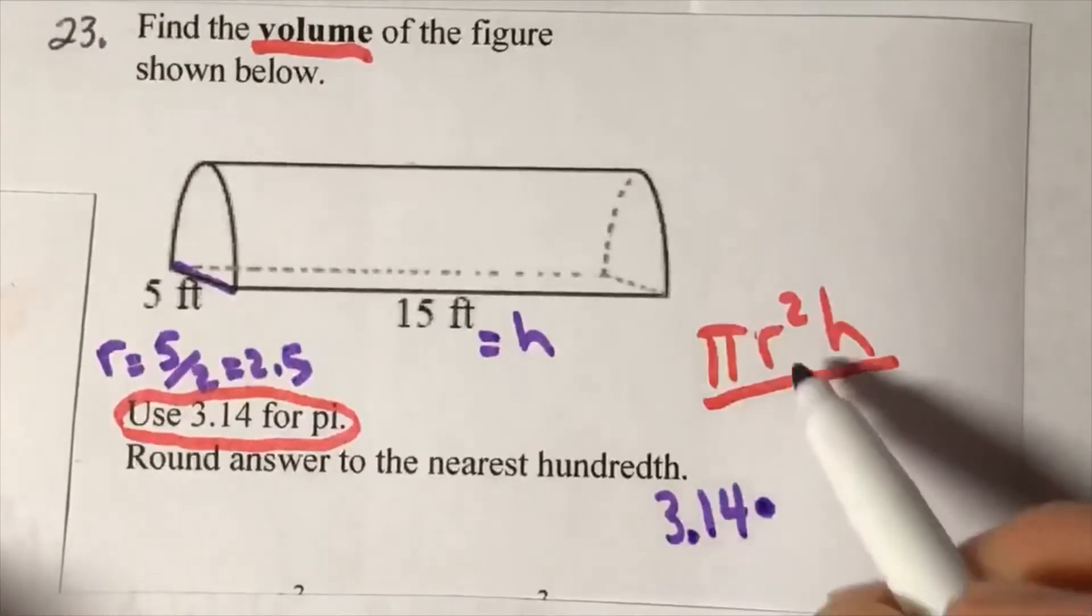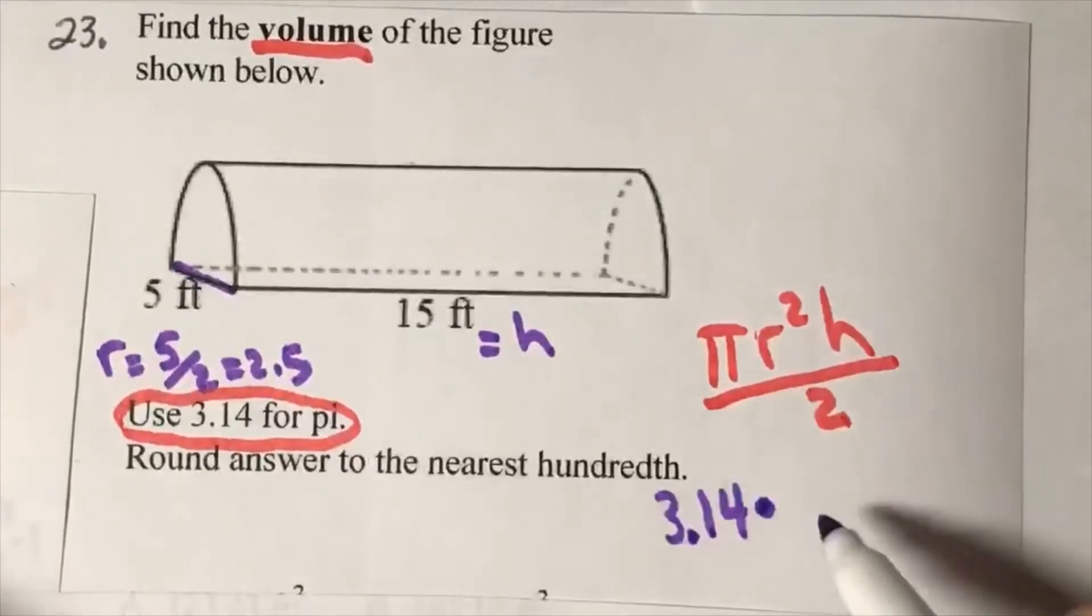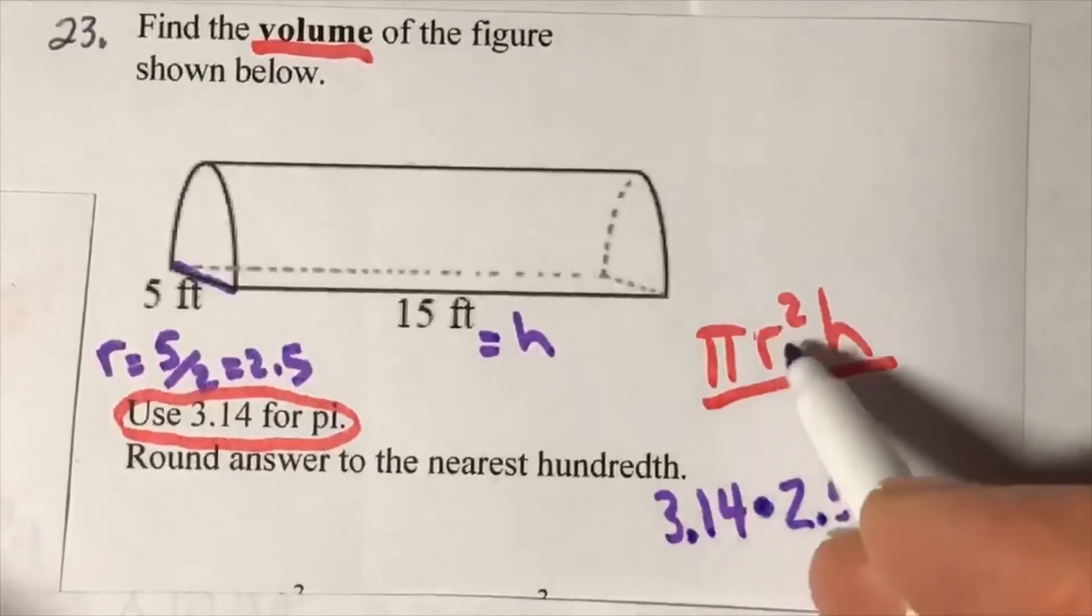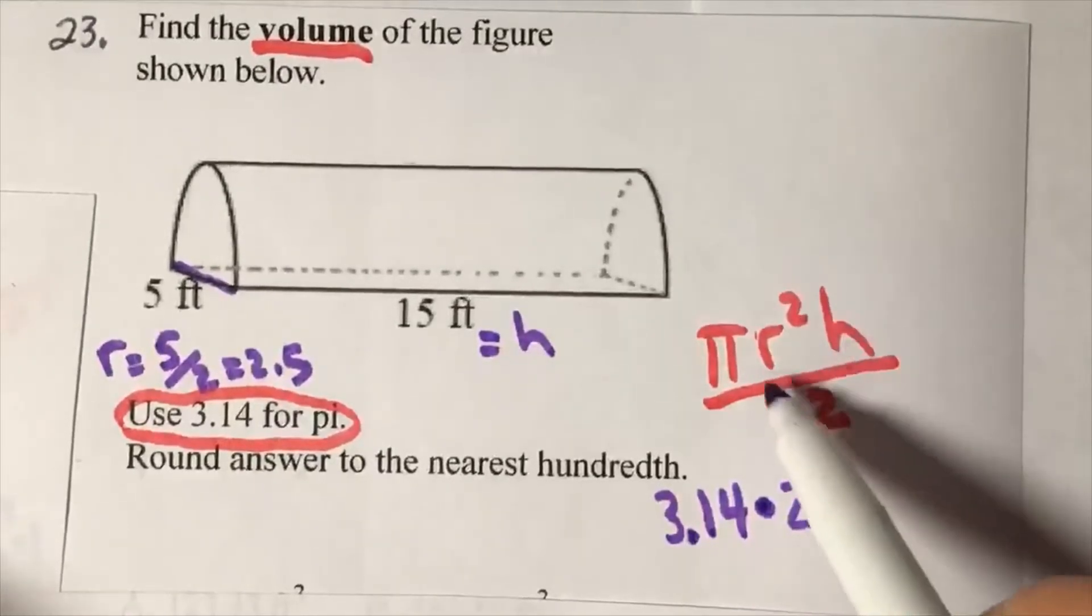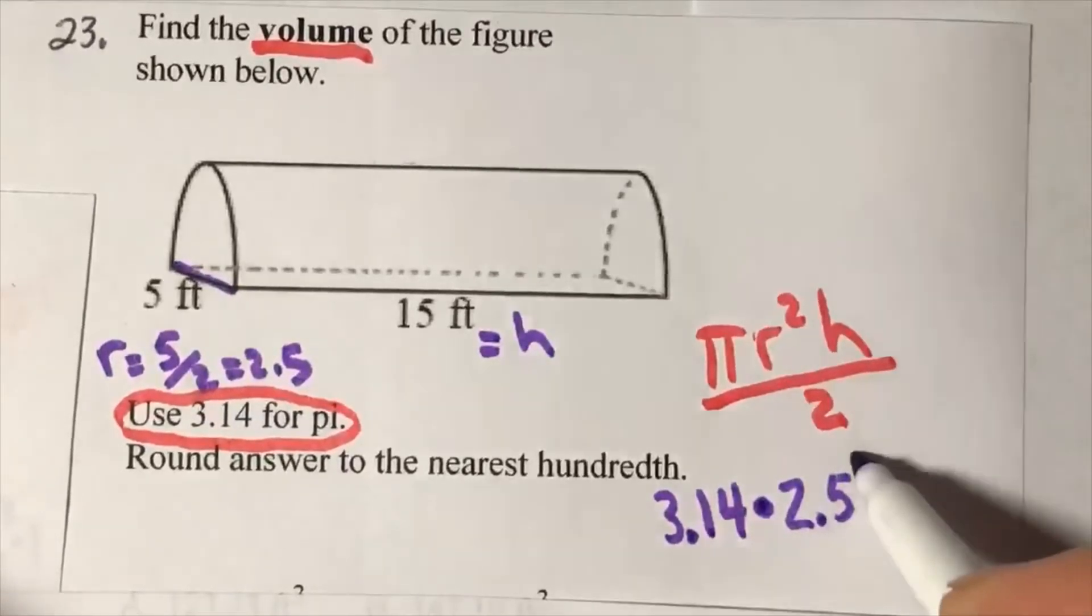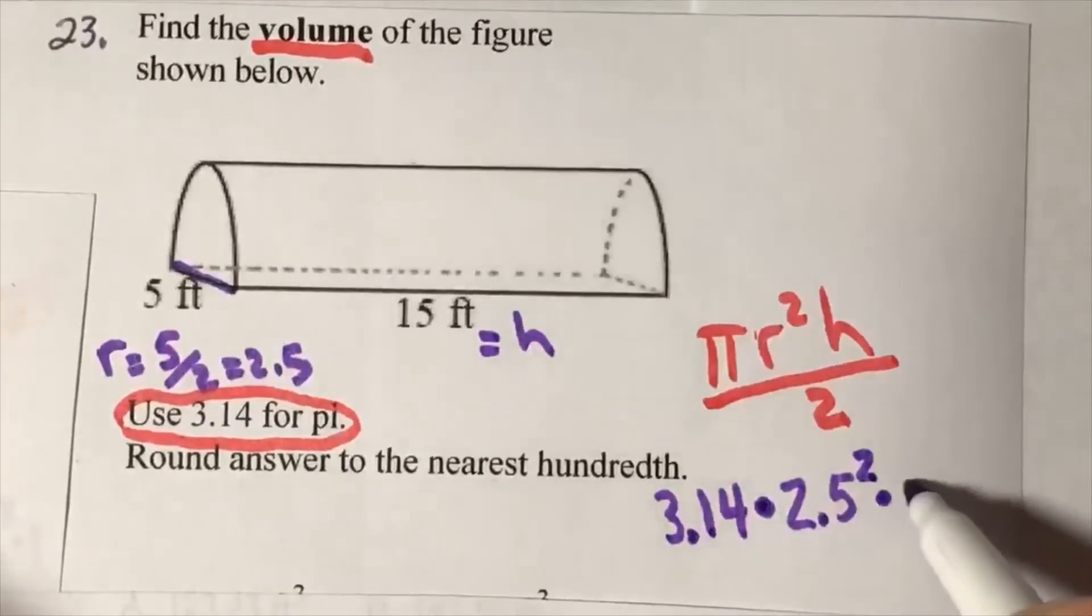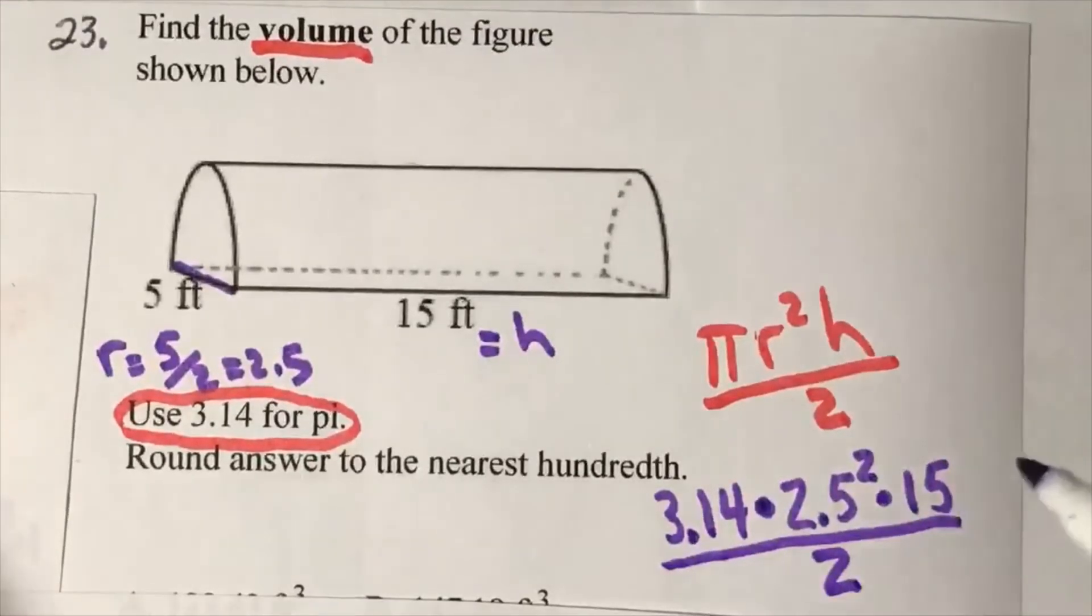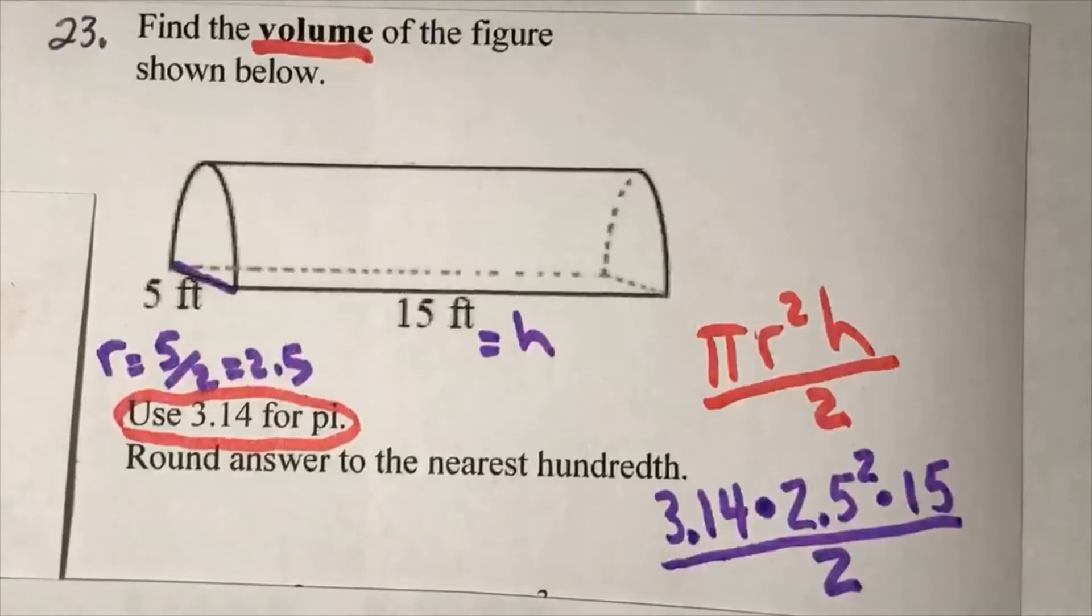So multiply 3.14 times the radius—we know it's 2.5—and square it. Don't forget, come back to this formula here. It tells you what to do: times 15.